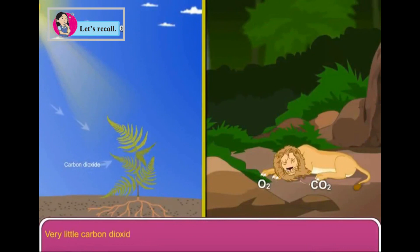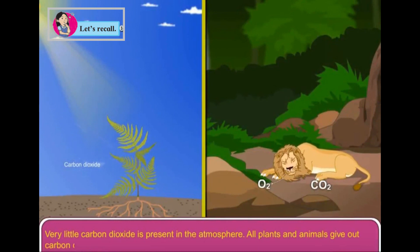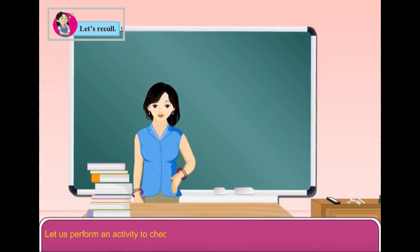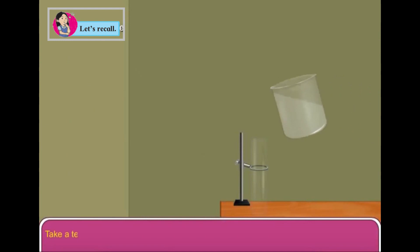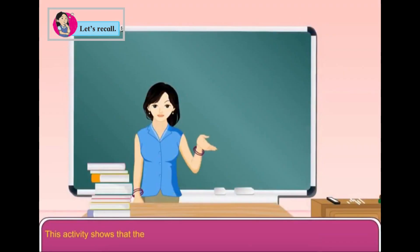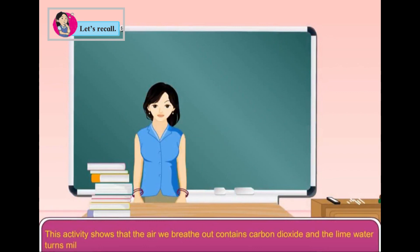Very little carbon dioxide is present in the atmosphere. All plants and animals give out carbon dioxide in the process of respiration. Let us perform an activity to check the presence of carbon dioxide in the air we breathe out. Take a test tube and add some lime water in it. Breathe out some air into the lime water with the help of a straw. The lime water turns milky, showing that the air we breathe out contains carbon dioxide, and the lime water turns milky due to the formation of calcium carbonate.